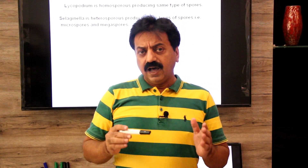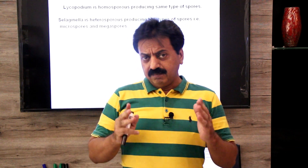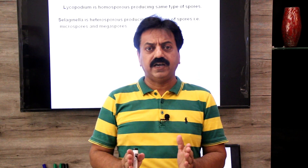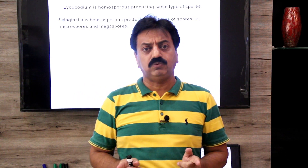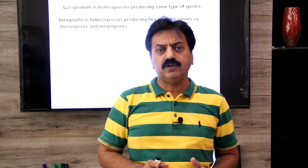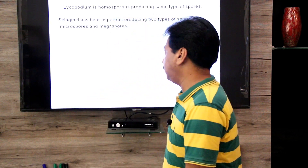An important point: in this class some genera are homosporous and some are heterosporous. If the sporophyte is homosporous, the gametophyte that develops will be bisexual, producing both antheridia and archegonia — producing both sperm and egg. But when the sporophyte is heterosporous, the gametophyte that develops will always be unisexual — microspores giving male gametophyte and megaspores giving female gametophyte.